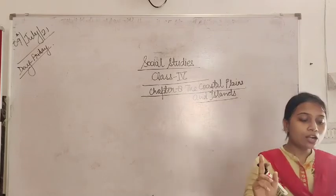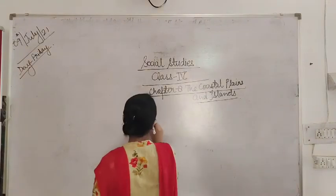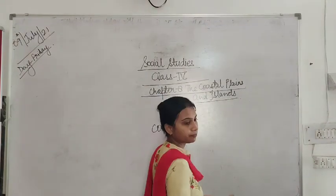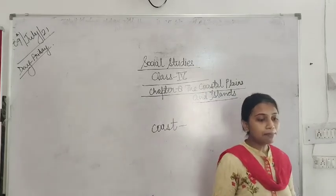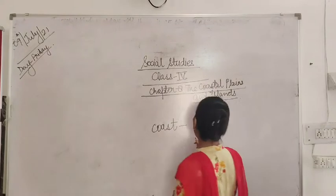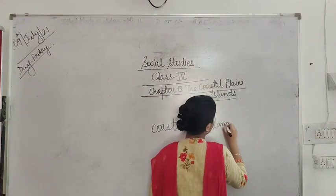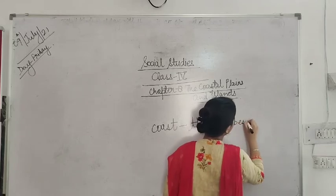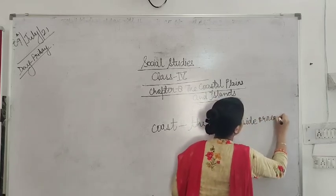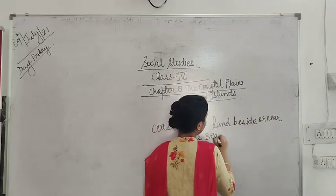What do you mean by coast? Coast means the land beside or near a sea or an ocean. Coast — which is beside or near a sea or an ocean.